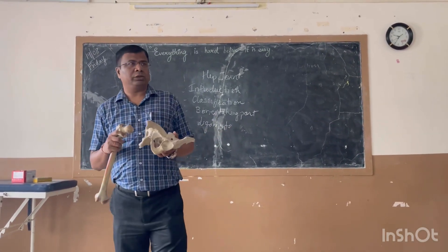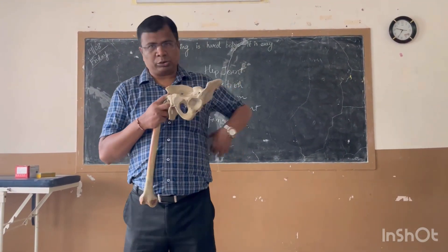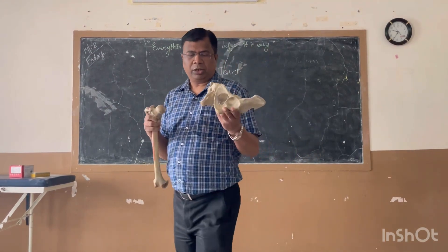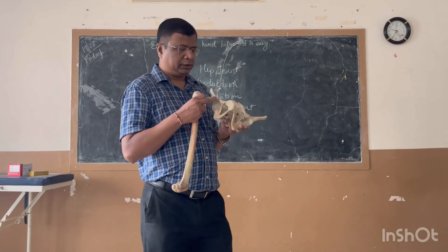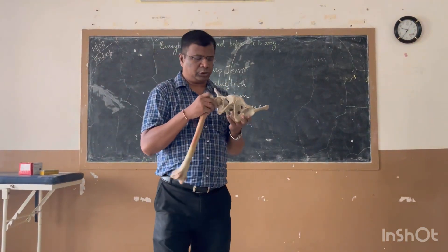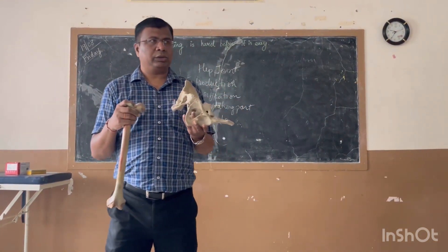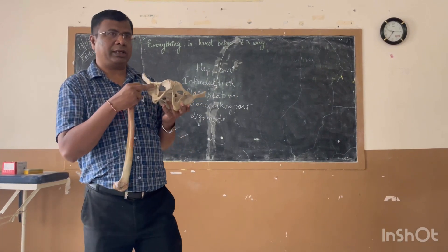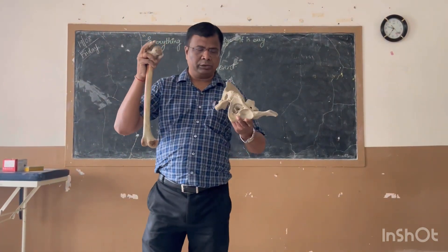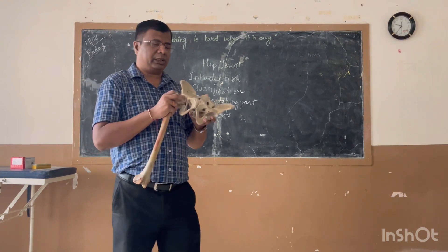The hip joint is the strongest joint of the lower limb. It is very stable compared to the shoulder joint of the upper limb. Both are ball and socket joints, but the shoulder joint is much weaker. The bones forming the hip joint are the acetabulum of the hip bone and the head of the femur. The first factor contributing to stability is the depth of the acetabulum, which is quite deep, and the head of the femur is large, circular, and fits properly into it.